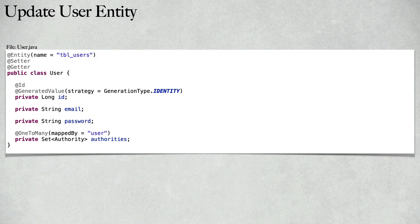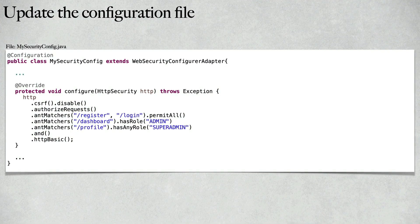The second step is to update the User entity. Inside the User entity we are going to create a Set of authorities. The user can have multiple authorities, so we will use the OneToMany annotation and map it using the 'mappedBy' attribute pointing to the user property inside the Authority entity.